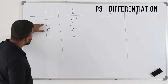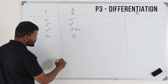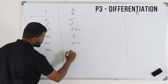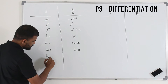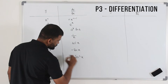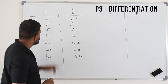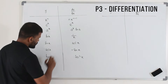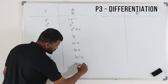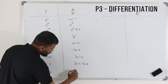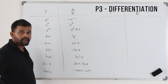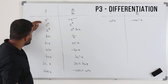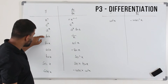If you differentiate ln x — natural logarithm of x — you get 1 over x. So we have the algebraic function, exponential function, and logarithmic function covered. Now let's look at trigonometric functions. If you differentiate sin x, you will get cos x. The derivative of cos x is minus sin x. And the derivative of tan x is secant squared x.